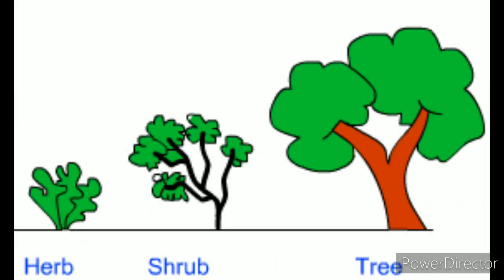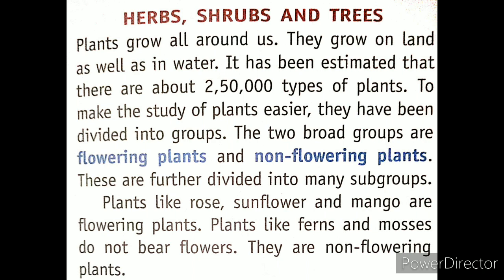Our first topic is herbs, shrubs and trees. Plants grow all around us — they grow on land as well as in water. It has been estimated that there are about two lakh fifty thousand types of plants. To make the study of plants easier, they have been divided into groups. The two broad groups are flowering plants and non-flowering plants, and these are further divided into many subgroups.